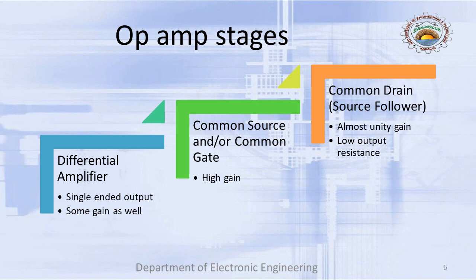Last but not least is the common drain or source follower stage, because what we aspire to achieve at the output is very low output resistance, and the only configuration that offers low output resistance is the common drain stage. The ideal gain for a common drain stage is unity — practically something like 0.9 or 0.95 — so it is not really an amplifier in that sense, but it offers low output resistance. So the picture is: a differential amplifier cascaded with a common source, cascaded with a common drain — and voilà, we have an operational amplifier.